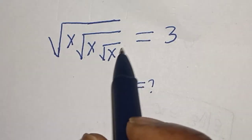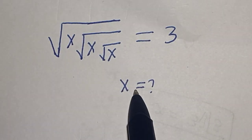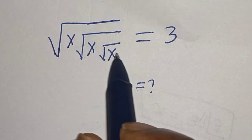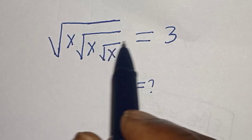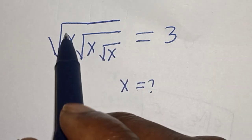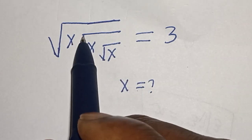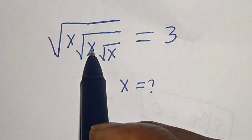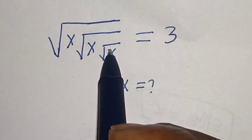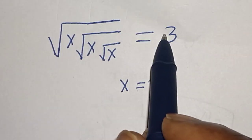Hello, welcome to Magist. In this class, I want to find the value of x from this nice equation: square root of x, multiplied by square root of x, multiplied by square root of x, is equal to 3.